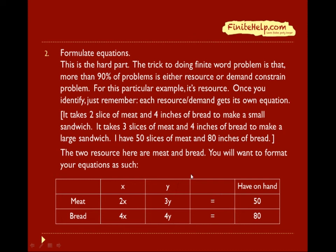Now, what we have on hand, we are going to put it on the right side over here, to the right of the equal sign. I have 50 slices of meat, so we are going to put 50 over here. And we have 80 inches of bread, and we put 80 over here. Now you just put a plus sign here and here. And these are your two equations.